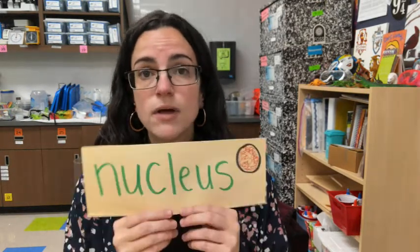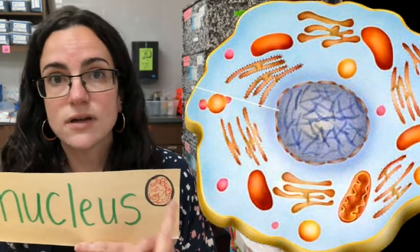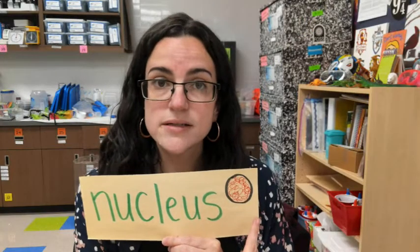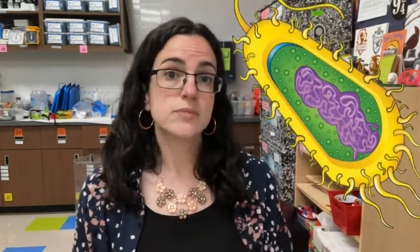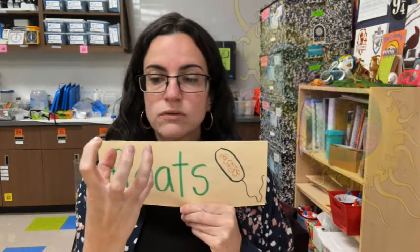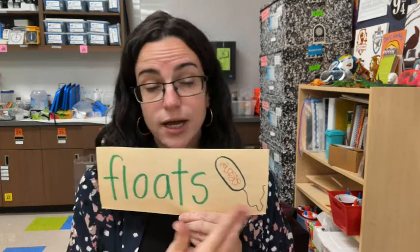With a eukaryote cell, that DNA is going to be found in the nucleus — just like right here. But on the opposite end, when you talk about a prokaryote cell, there is no nucleus at all. That DNA just kind of floats around, like in my drawing right here. There's not some area where that DNA is concentrated; it just floats around.